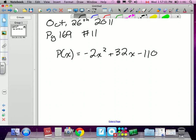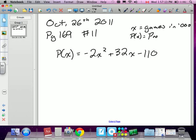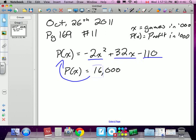Remember x is games in thousands, and P(x) is profit in thousands. How many games must the company sell in order to make a profit of $16,000? So they're looking at P(x) equal to 16,000. Because it's modeled in thousands, we're not actually going to plug in the entire number 16,000, we're just going to plug in 16 for P(x).